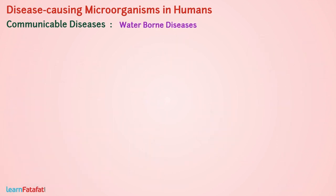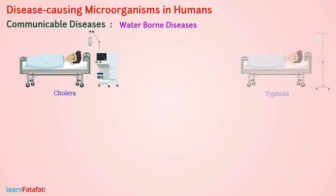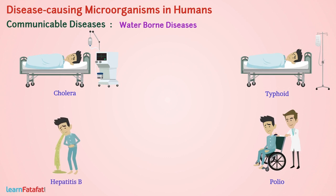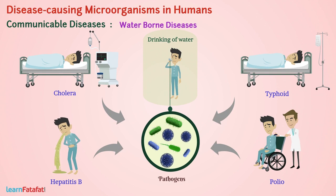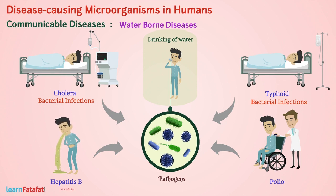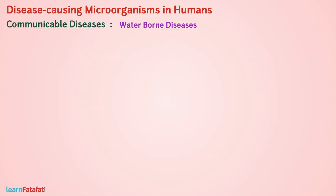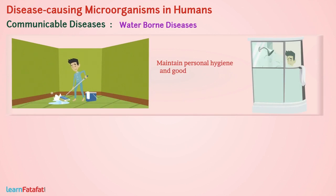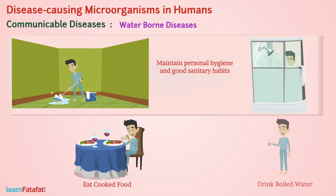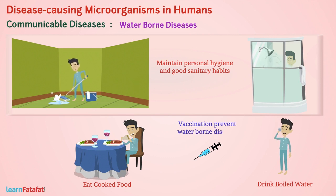Waterborne Diseases. Cholera, typhoid, polio, and hepatitis B are caused by drinking water containing pathogens of the respective disease. Cholera and typhoid are bacterial infections, whereas hepatitis B is a viral infection. To prevent such diseases, we should maintain personal hygiene and good sanitary habits, eat properly cooked food, and drink boiled water. Vaccination also helps to prevent waterborne diseases.